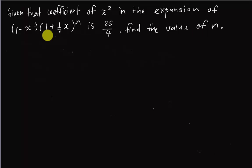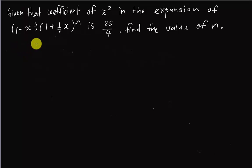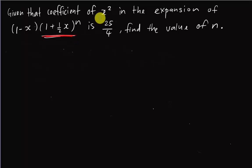We do not know what the power n is — n can be 10, 99, or any value. But in binomial theorem, n cannot be negative, and most of the time n is an integer and cannot be a decimal or fraction. In order to solve this kind of question, I will try to expand the n-term first, then multiply the whole expansion by (1 - x).